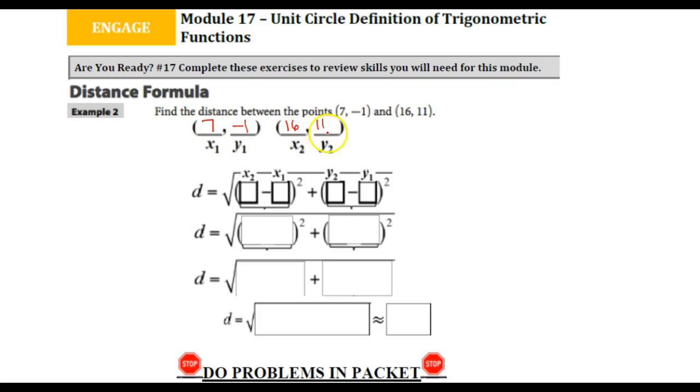Now distance formula is: distance equals the square root of (x₂ minus x₁) squared plus (y₂ minus y₁) squared. So I'm going to put these values in their place. Take some time to do that now.